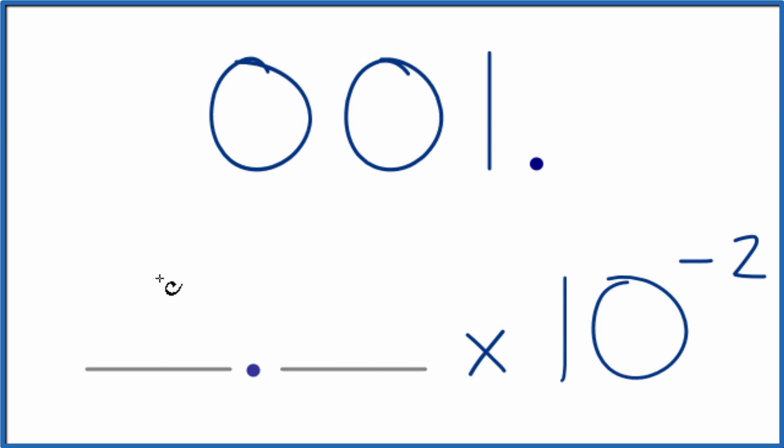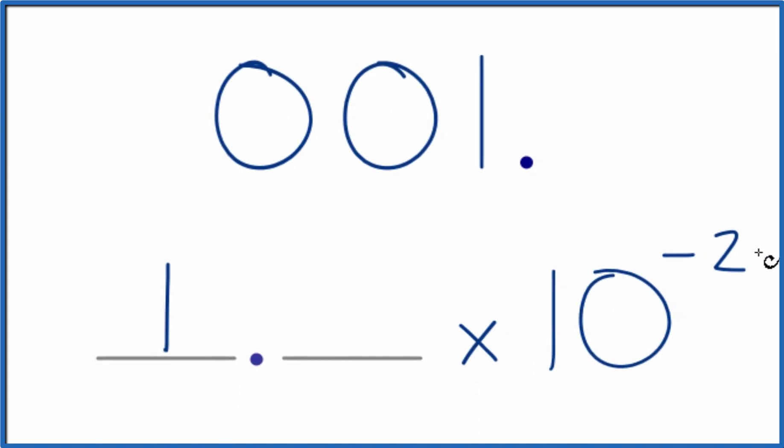Now we have our whole number, which we write here. And I usually wouldn't write the zero here. Just call it 1 times 10 to the negative second. Or your teacher might want you to put the zero there. So check with them, see what they say.